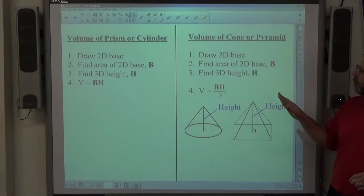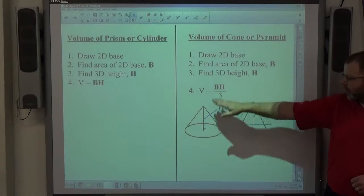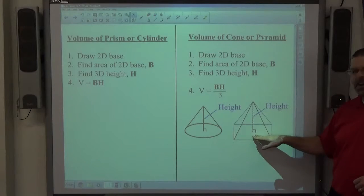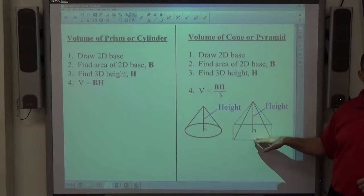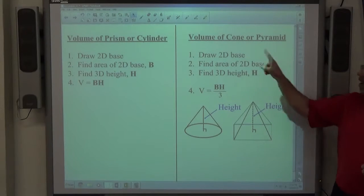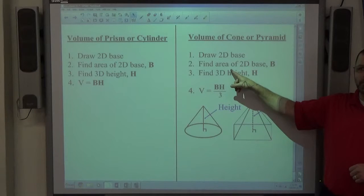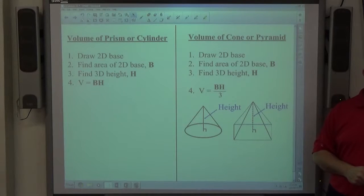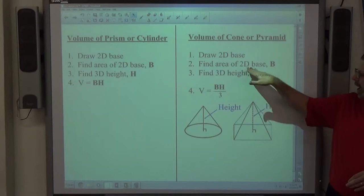If you look at a cone or a pyramid, it's going to have a two-dimensional base. This has a circle, this looks like a square or maybe a rectangle for a base. Draw the base, find the area of that base using the appropriate formula necessary to find the area of the two-dimensional figure. It doesn't have to be a three-dimensional problem while you're working that area out.